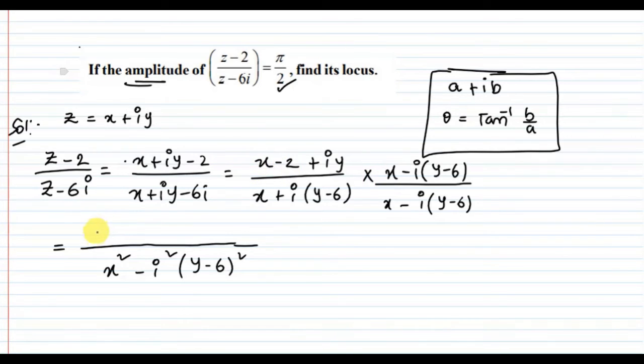For the numerator: (x - 2) times x, minus (x - 2) times i(y - 6), plus i times xy, minus i² times y(y - 6).